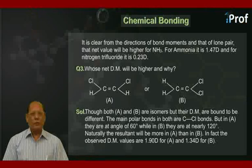Naturally, the resultant will be more in A than in B. In fact, the observed dipole moment values are 1.90 Debye for A, and 1.34 Debye for B.